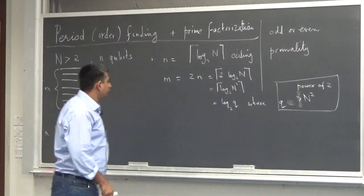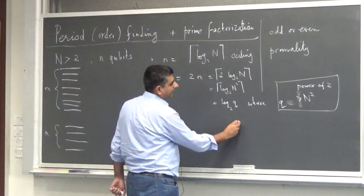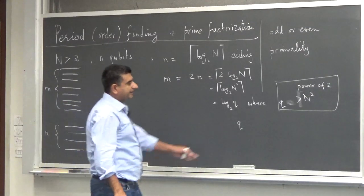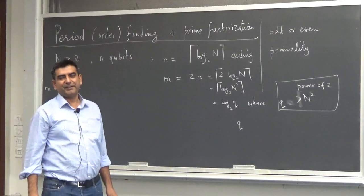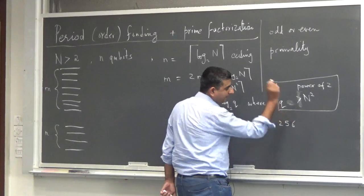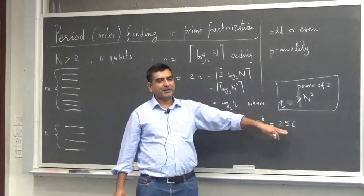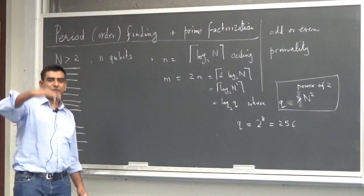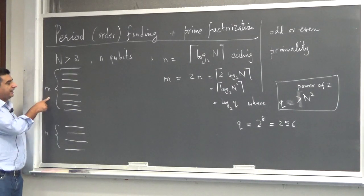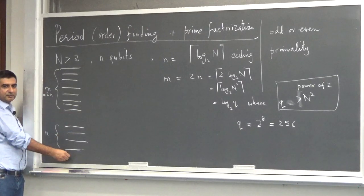So if small n is 4, then m equals 8, and q equals 2 raised to power 8, which is 256. With m qubits, I can encode integers from 0 to 255. Let me recap: small n qubits in the second register hold the number N, and m equals 2n qubits go in the first register. Let's call the first register the m-qubit register and the second register the n-qubit register.